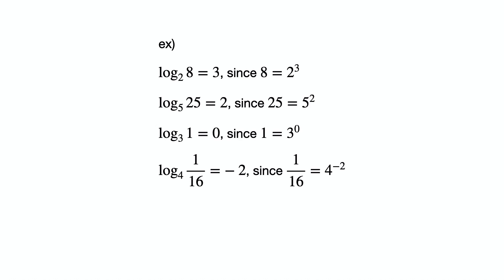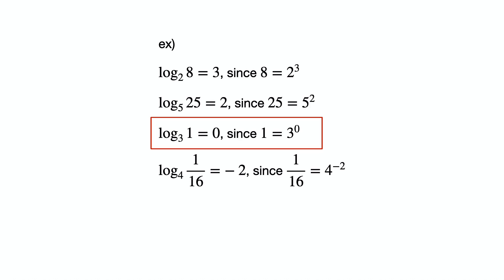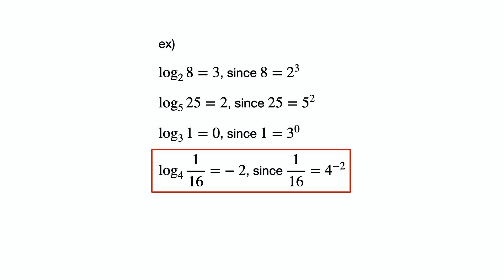Let's look at some examples to get familiar with log. Log base 2 of 8 is 3, since 2 cubed is 8. Log base 5 of 25 is 2, since 5 squared is 25. Log base 3 of 1 is 0, since 3 to the 0 power is 1. Log base 4 of 1 over 16 is negative 2, since 4 to the negative 2 power is 1 over 16.